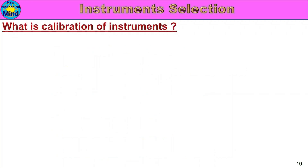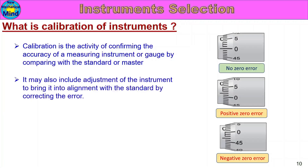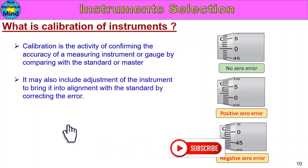First, what is calibration of instruments? Calibration is the activity of confirming the accuracy of a measuring instrument or gauge by comparing with the standard or master. One instrument or gauge is compared with one master part or standard part, and the instrument or gauge accuracy is confirmed through calibration.